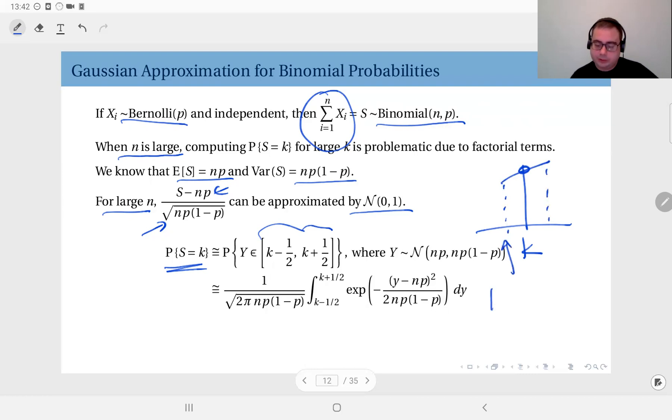If you remember I had said that if this is k, the Gaussian curve will approximate this in the region from k minus one half up to k plus one half right.